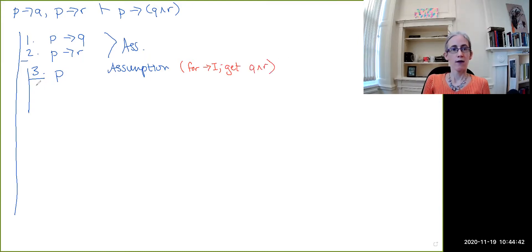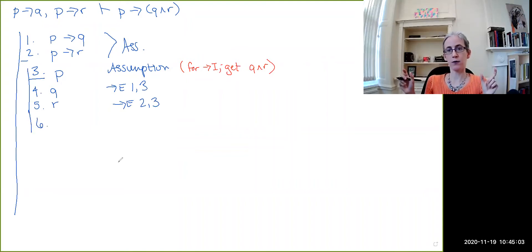So first thing to note is that line three is the antecedent of both the conditionals in one and two. So we can apply conditional elimination, first citing lines one and lines three, and then conditional elimination, citing lines two and three, which gets us Q and R as individual formulas. Our goal is to get them together as a conjunction, but that's just what conjunction introduction allows us to do, citing lines four and five.